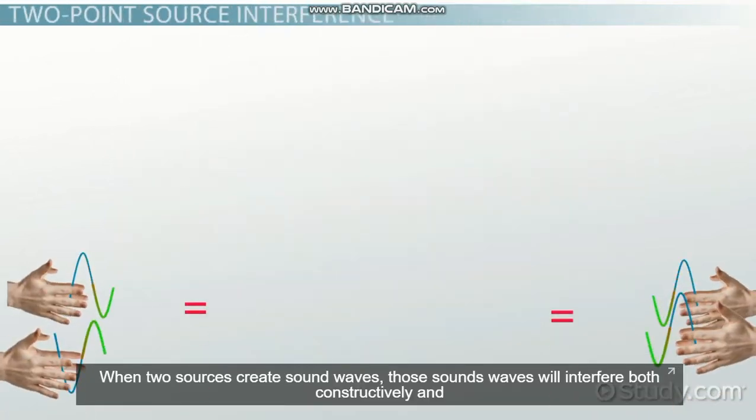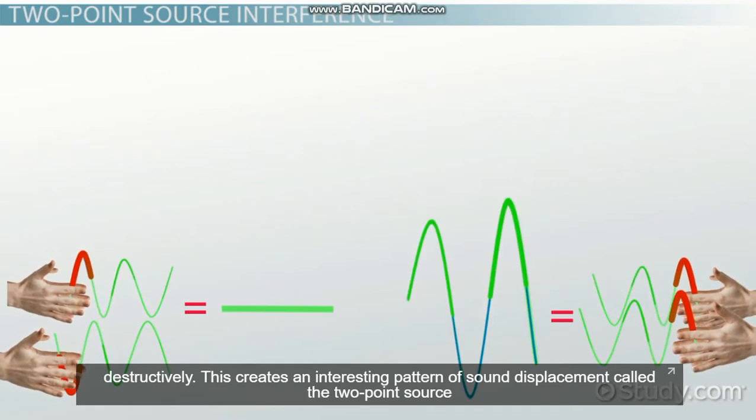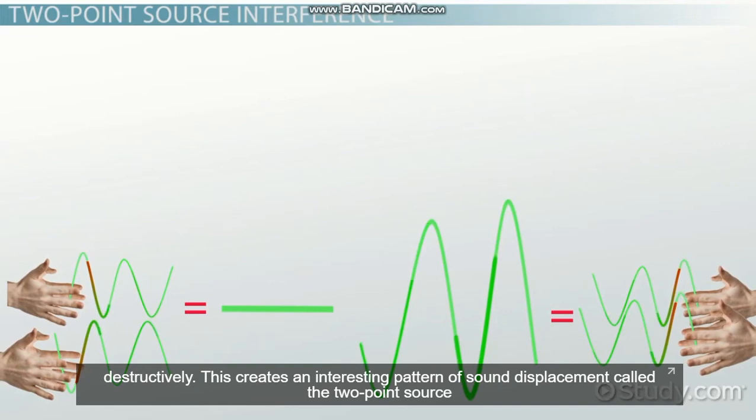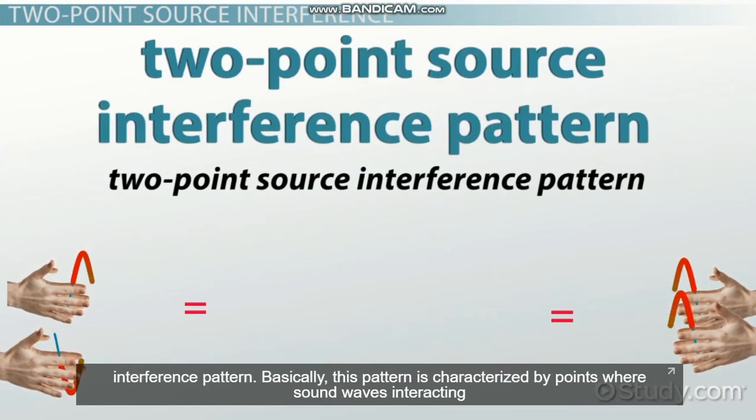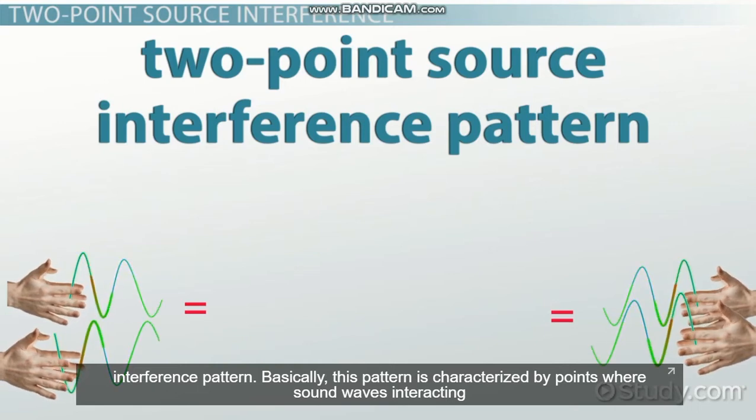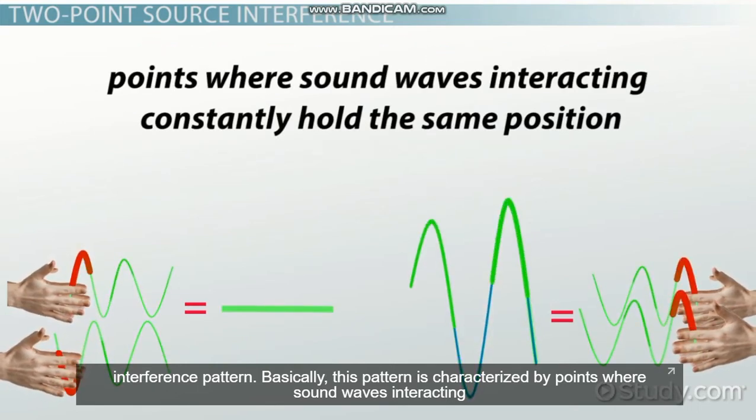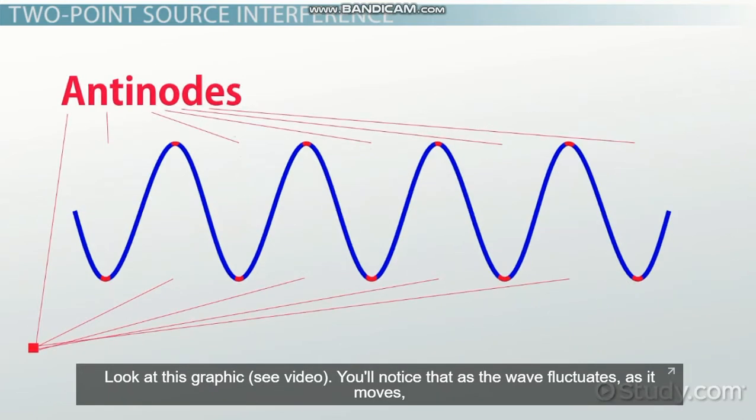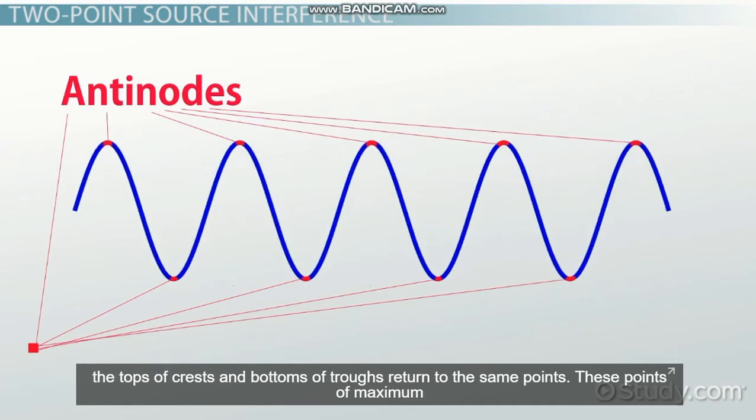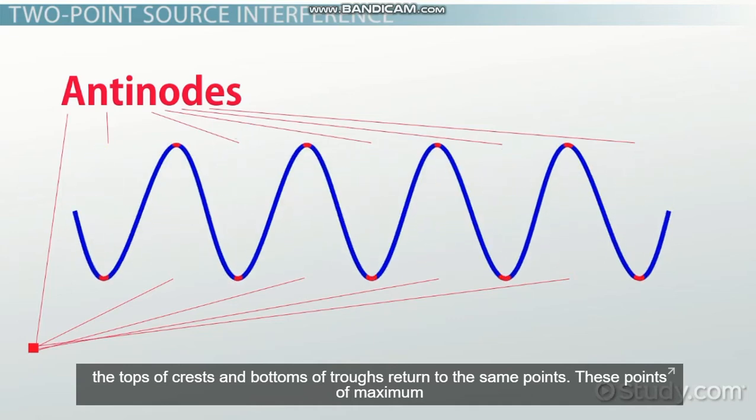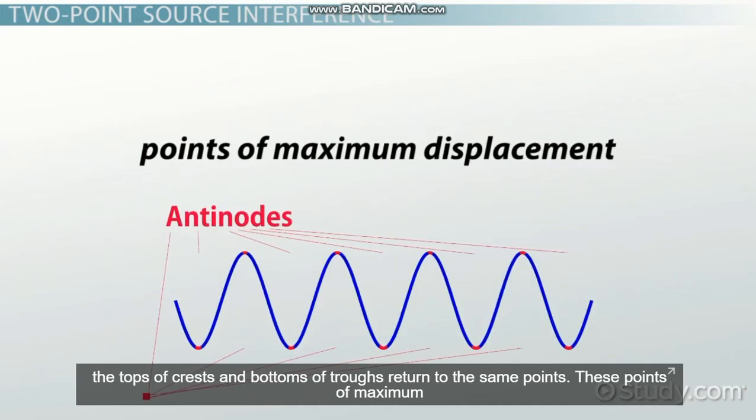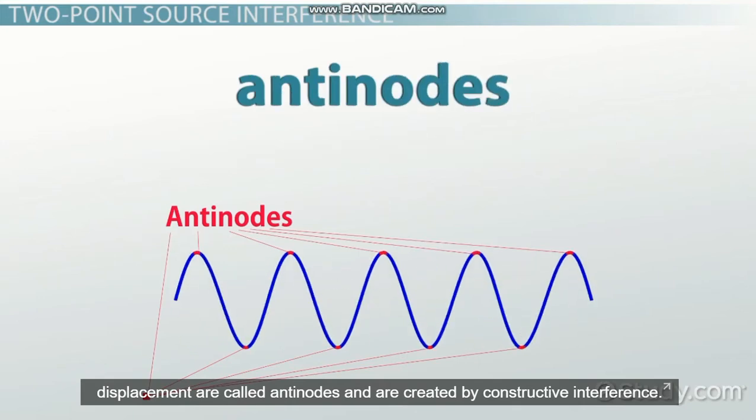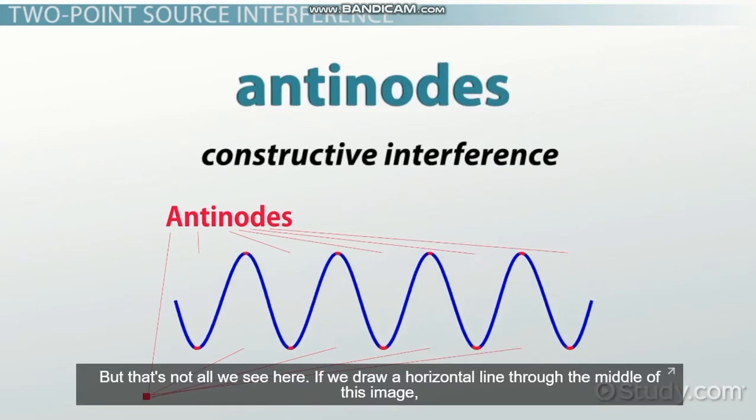When two sources create sound waves, those sound waves will interfere both constructively and destructively. This creates an interesting pattern of sound displacement called the two-point source interference pattern. Basically, this pattern is characterized by points where sound waves interacting constantly hold the same position. Look at this graphic. You'll notice that as the wave fluctuates as it moves, the tops of the crests and bottoms of the troughs return to the same points. These points of maximum displacement are called antinodes and are created by constructive interference.